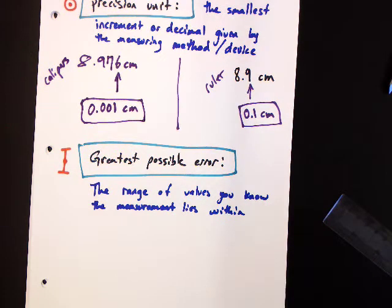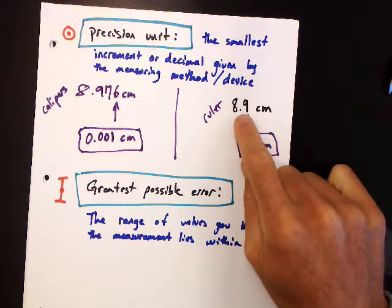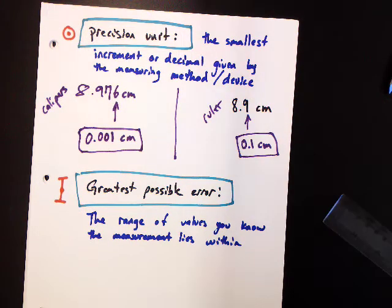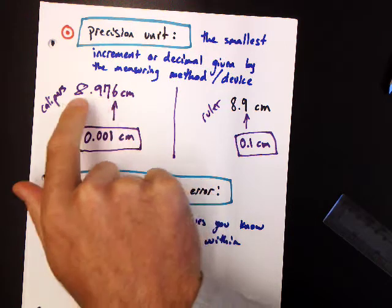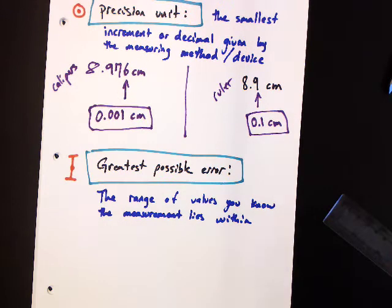Now let's talk about greatest possible error. This is the idea of there's a range of values that I know this measurement lies between. What is that range? Is the measurement exactly 8.976 plus or minus how many?